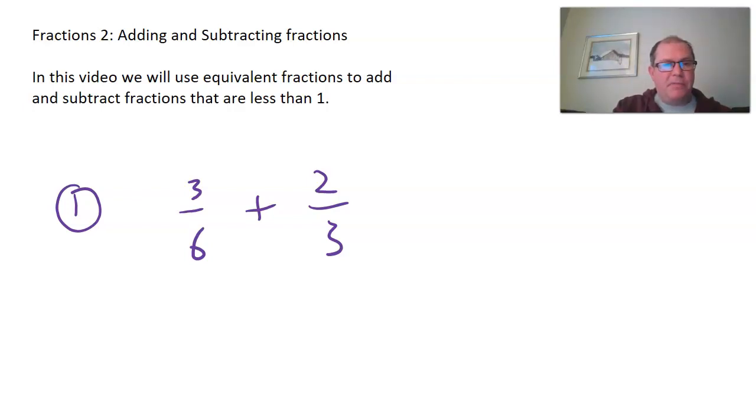And we call these proper fractions when we don't have a mixed number. If you have something like one and a half, that would be considered a mixed number. When we have just a numerator divided by a denominator, that's a proper fraction when it's less than one.